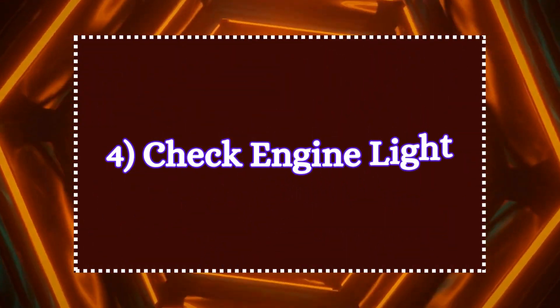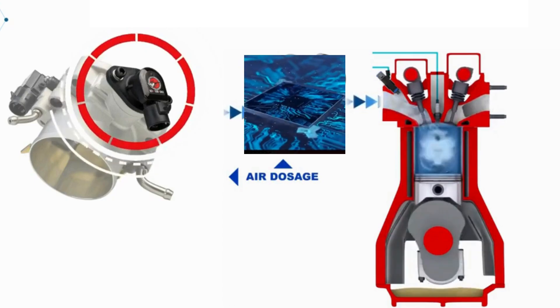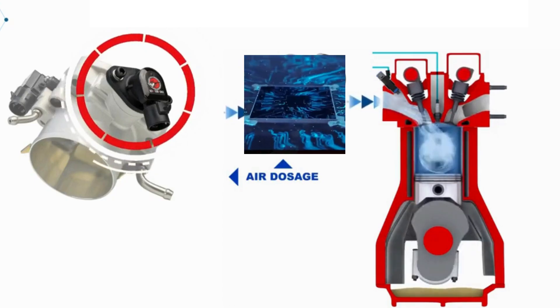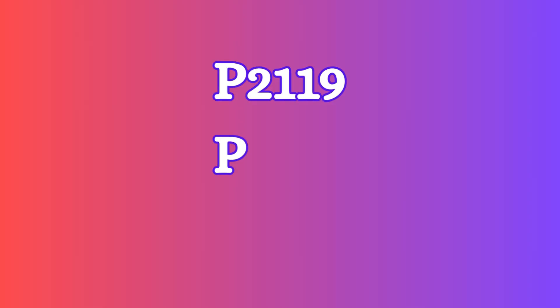4. Check engine light. A faulty throttle body usually triggers the check engine light. This is often due to the engine control unit detecting improper airflow or issues with the throttle position sensor. A bad throttle body may also trigger the P2119, P2176, or P0121 trouble code.